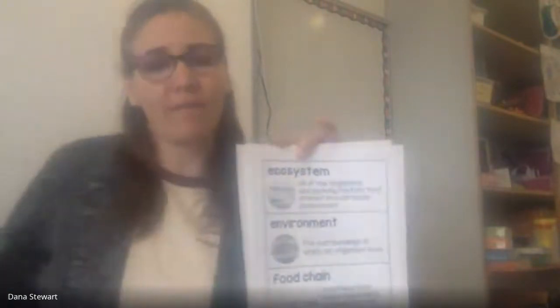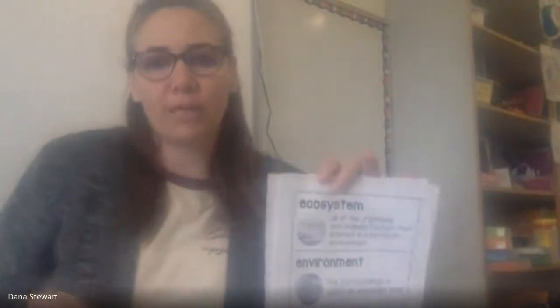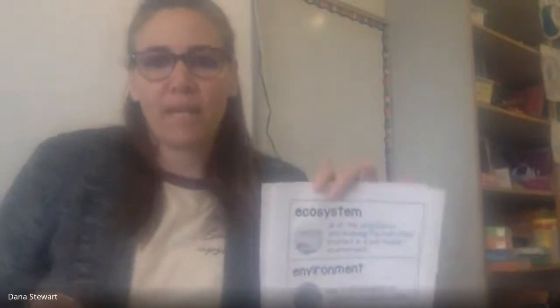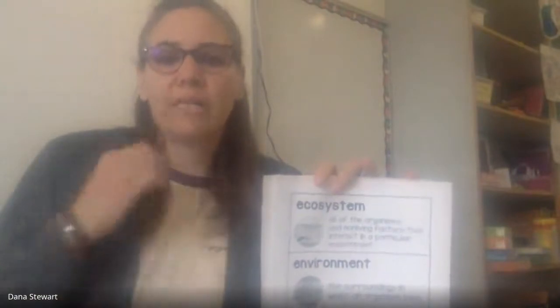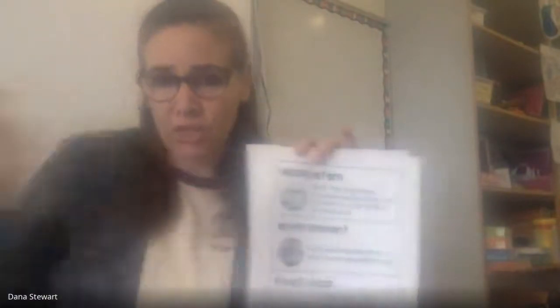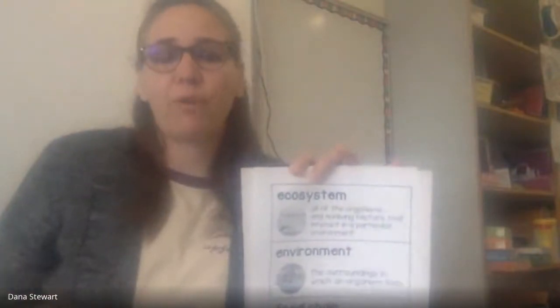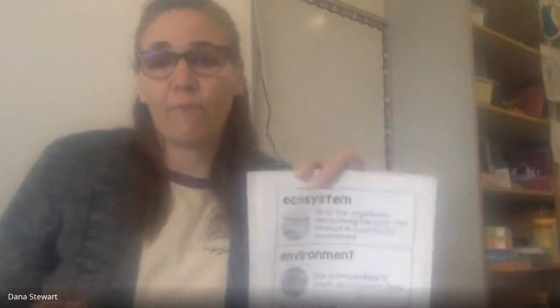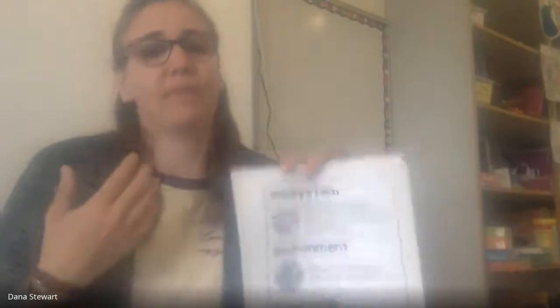They will both have the same picture on the card — one with the definition and one with just the word itself. For students who are English learners or need more visual support, they could match up the pictures. For example, for herbivore I could have a picture of a rabbit eating lettuce to represent plant-eating animals.